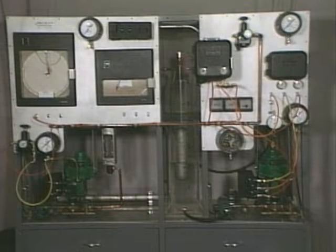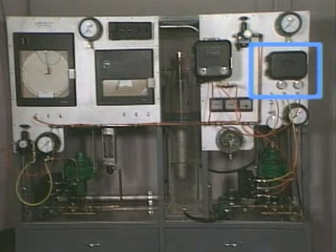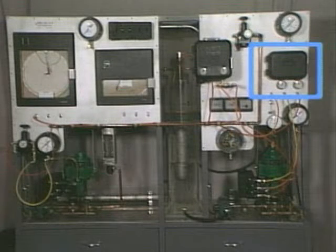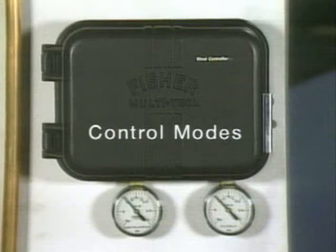In an automatic control system, a controller initiates a corrective action based on the difference between the signal it receives and the set point for a controlled variable. The various types of corrective actions that controllers can provide are called control modes.